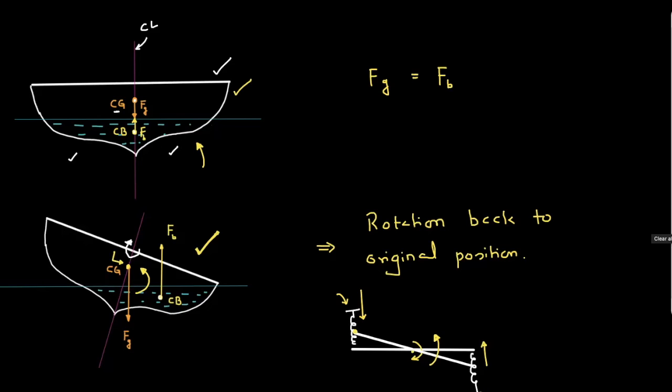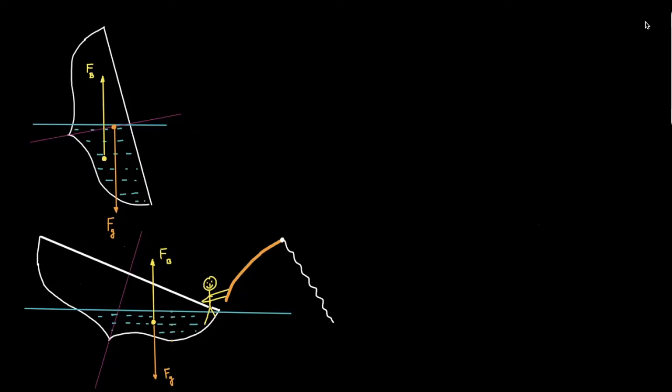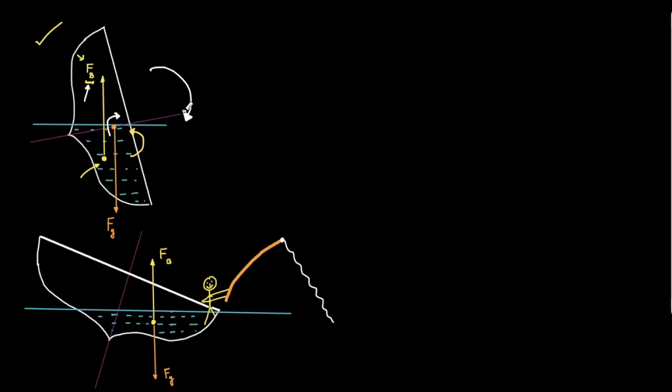Let us take a few more variations. In this case, the boat has tilted so much that the center of the buoyant force shifts to the left hand side. Now the buoyant force is acting here, and the gravity force is on the right hand side of the buoyant force. The buoyant force will further topple the ship rather than restore it. So whatever storm there is, it should not rotate the ship this far.